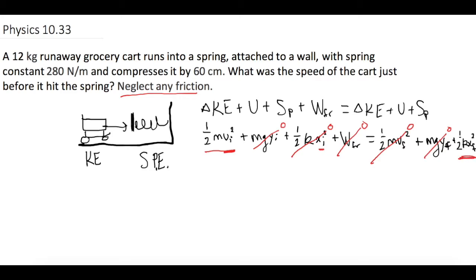That big long equation reduces then to one half M V squared initial equals one half K delta X final squared.